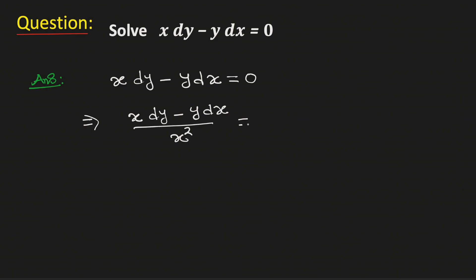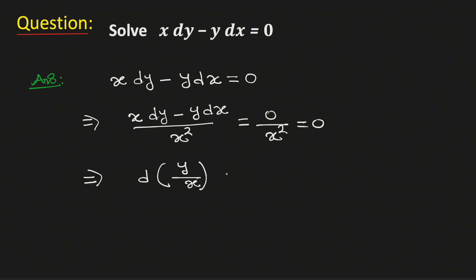We have 0 by x squared on the right hand side, which is equal to 0. The left hand side can be written as d of y by x, using the quotient rule of derivatives, which is equal to 0.